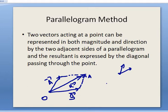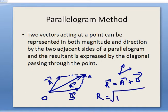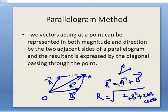The parallelogram law states that the resultant R will be the diagonal of the parallelogram drawn. The magnitude of the resultant will be the square root of A squared plus B squared plus 2AB cosθ, where θ is the angle between the two vectors.